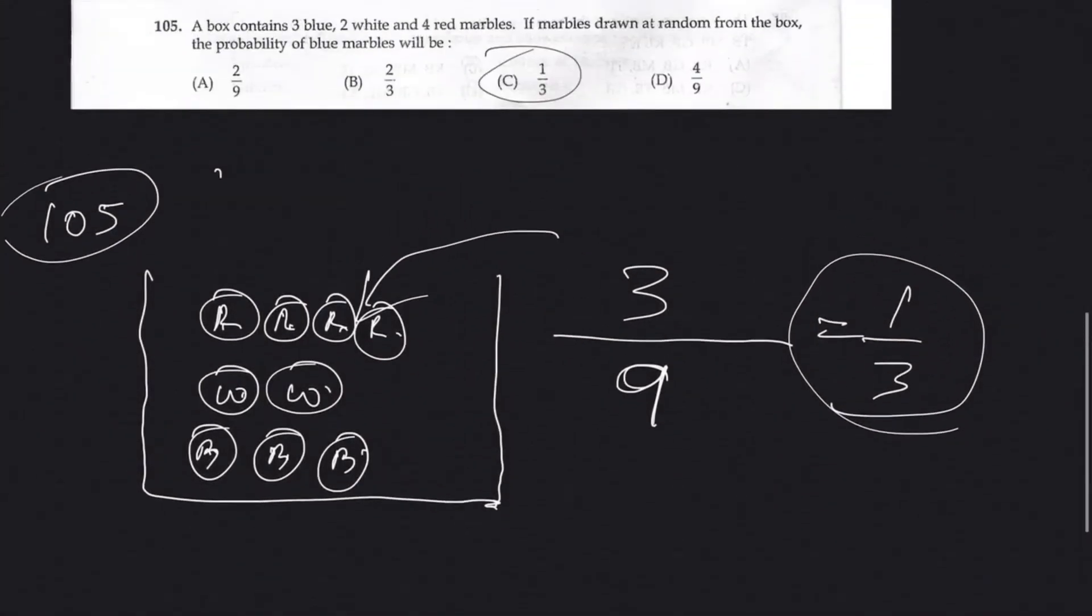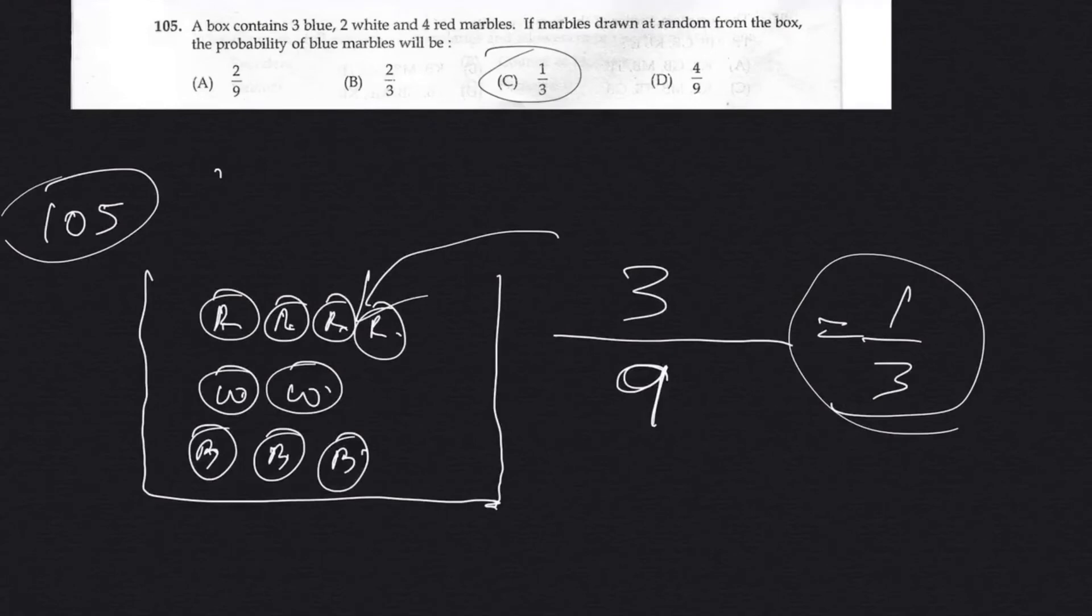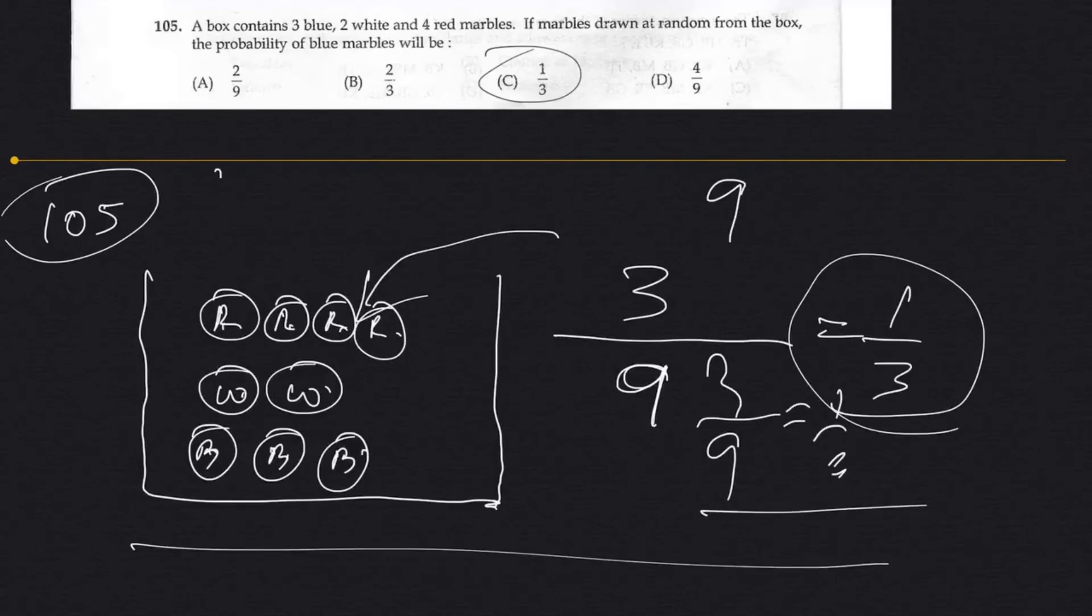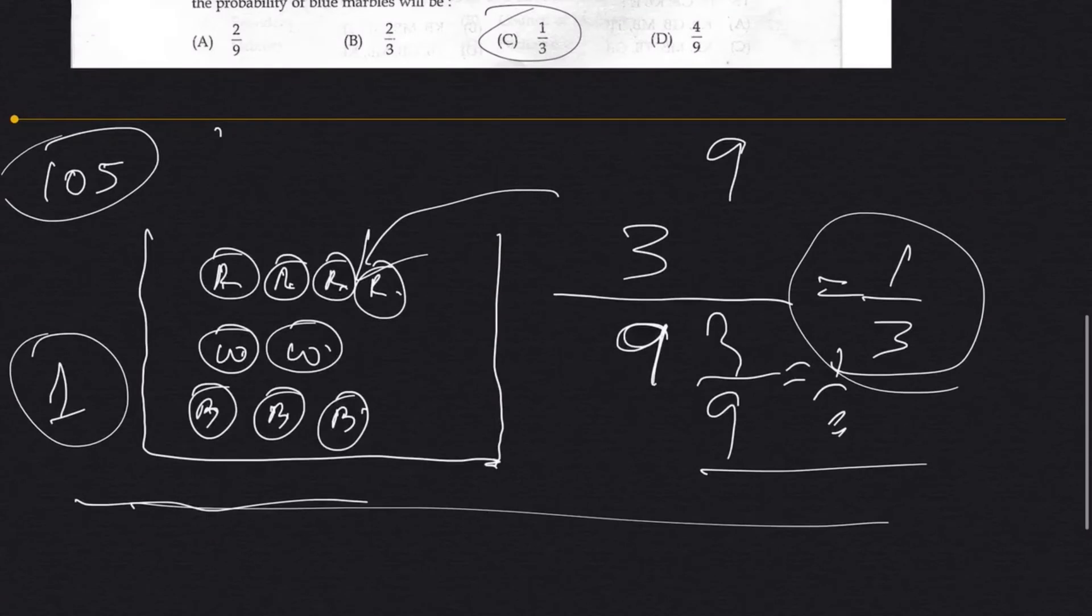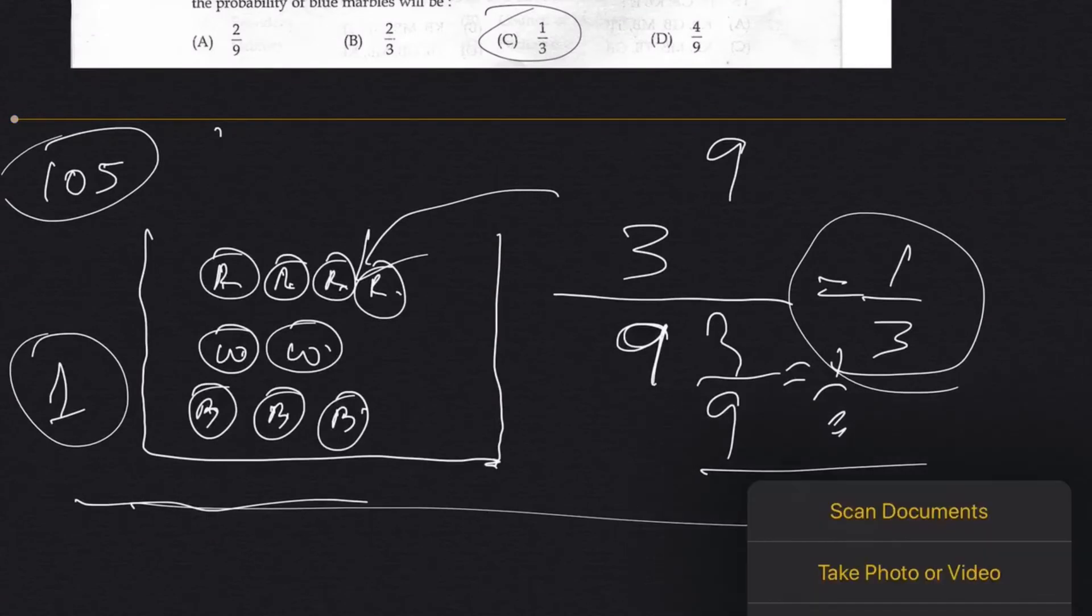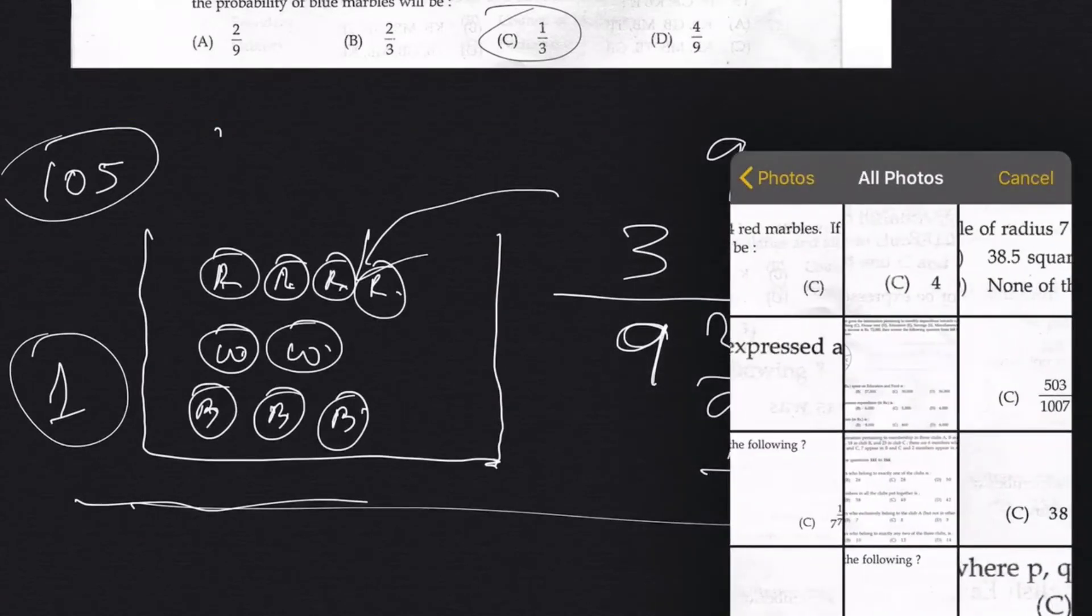Earlier I told that these questions can be solved in 10 seconds. Alright, so suppose 5 seconds to solve this box. 3, 4, 5, 4, 9. 9 bar probability of blue marbles, 1 by 3. So it's 1 mark, let low move free. So option is 1 by 3.